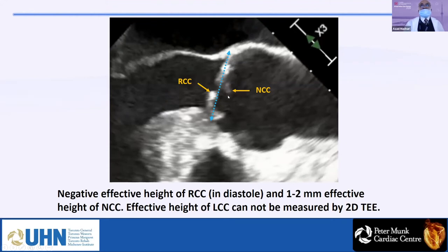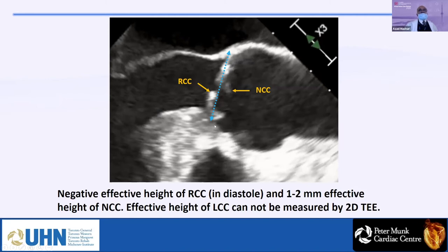Regarding the left coronary cusp — thanks to God, it does not prolapse too much. But measuring it by 2D TEE is difficult because you cannot have both the non and the left cusp in the same view at the same time. You can do it by 3D MPR and measure each leaflet individually — though that requires post-processing and is not always easy in the OR. These two cusps are the ones that prolapse most and can be measured easily by effective height.